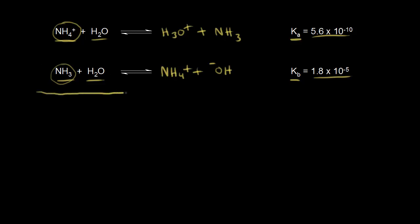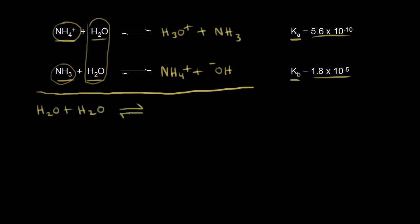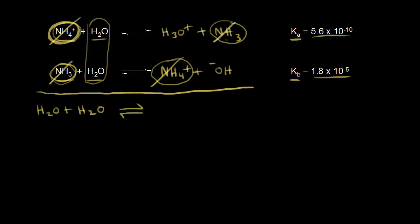What would happen if we add these two reactions together? We have two water molecules for our reactants, so H2O plus H2O. Ammonium appears on the left as a reactant and on the right as a product, so it cancels out. Same thing happens with NH3 — it appears on both sides and cancels. Our only reactants are 2H2O, and for our products we get H3O+ and OH minus.